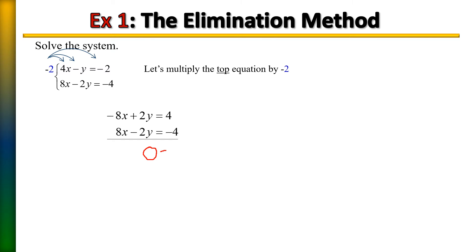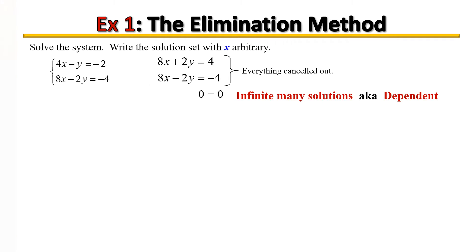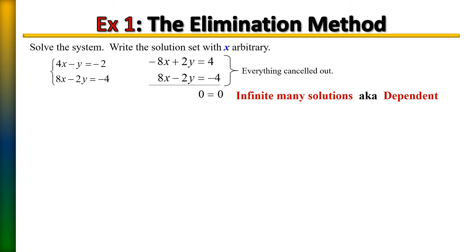The left side equals zero and the right side equals zero, leaving us with the statement zero is equal to zero. Is zero equal to zero? Yes it is — zero is the same as zero, so that left us with a true statement. When the variables cancel and leave us with a true statement, the answer to the system is infinitely many solutions. The solution set is the set of all points on the line of the equation.